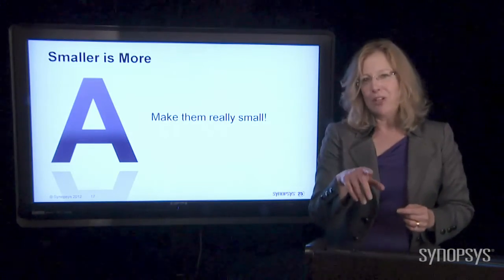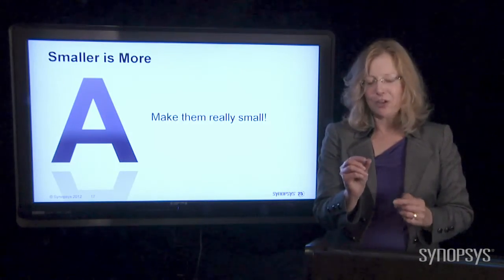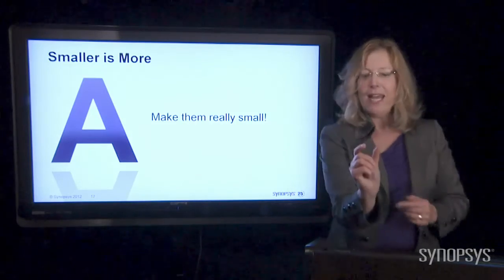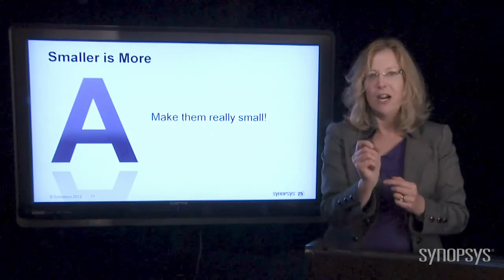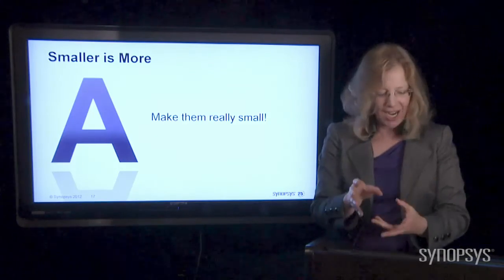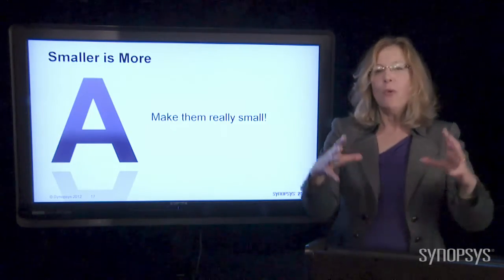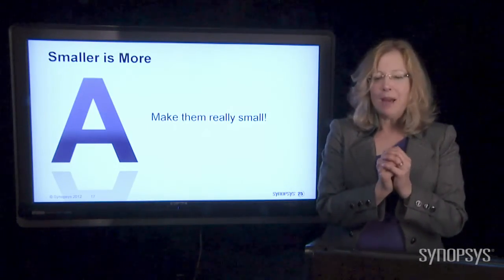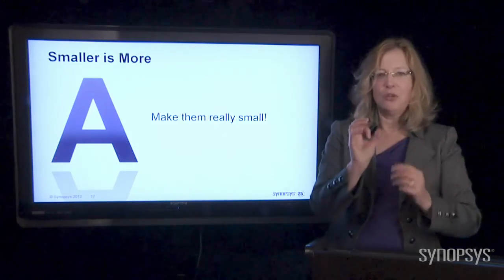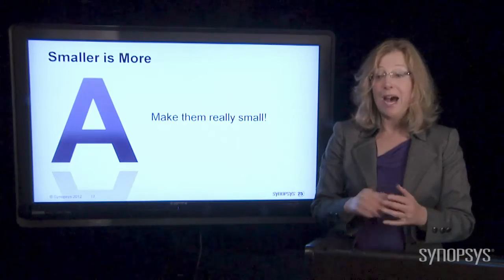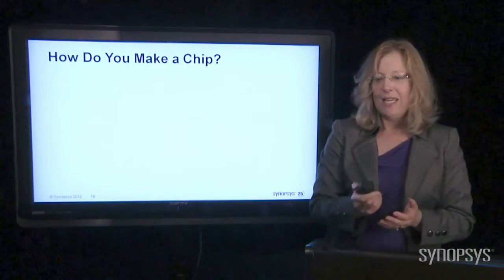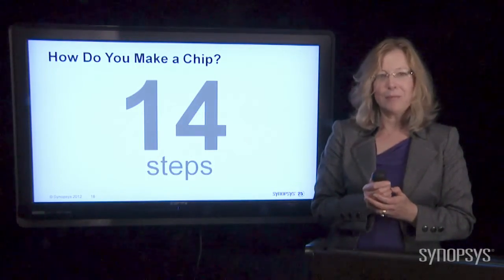What's also interesting about human hair is it's a terrible unit of measure because people who have dark thick hair have very wide hairs and people like me who have thin lighter colored hair have very thin hair. But regardless, these wires are tiny, tiny, tiny. So we make them very, very small. We pack a billion transistors into a single chip. And in the next set of videos I'm going to tell you how we do that in 14 simple steps. I'll see you next time. Bye.